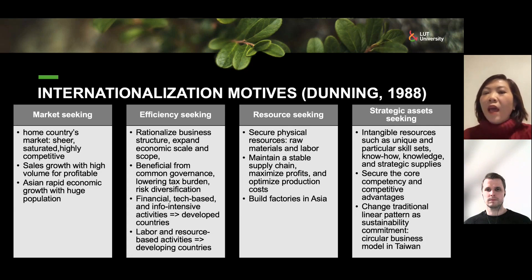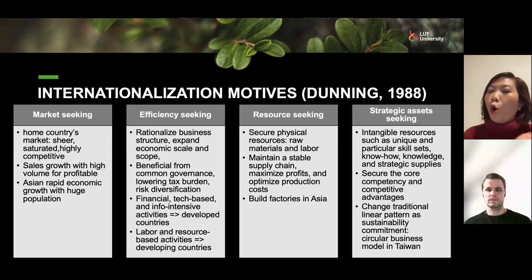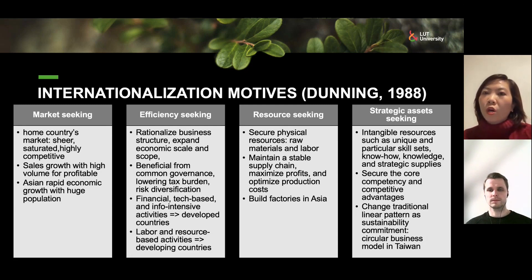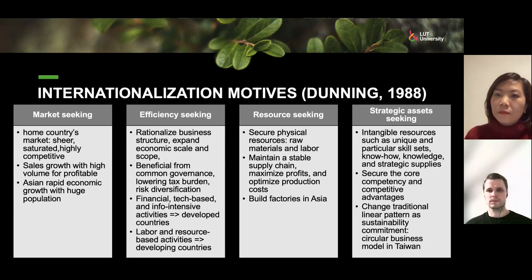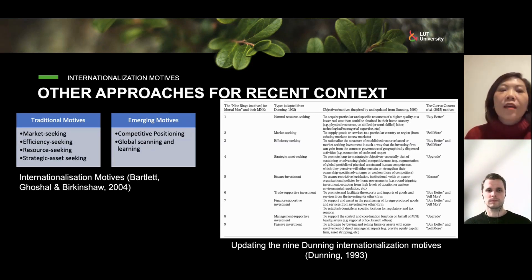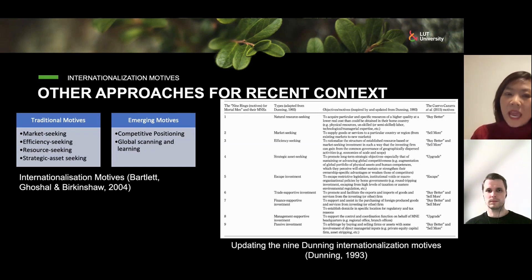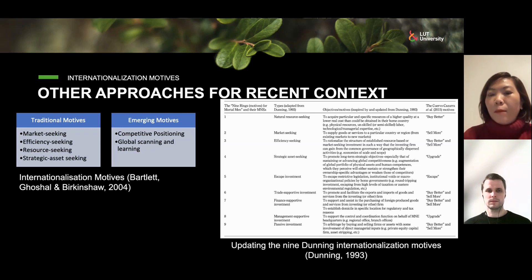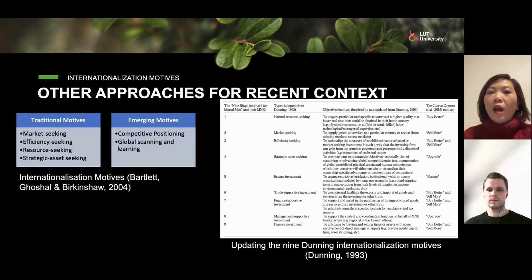For strategic assets, sustainability is now a strong commitment of IKEA. They are looking for markets that can provide unique skill sets, know-how, knowledge and strategic supply. For example, they built a circular economy project in the Taiwan market to secure core competencies and build competitive advantage. The context today is quite complex, so internationalization theory also needs to be updated with emerging motives such as competitive positioning, global scanning and learning — exploring new markets to go head-to-head with competitors. We can also use the updated Narula internationalization motive framework for a more comprehensive picture of motivation.